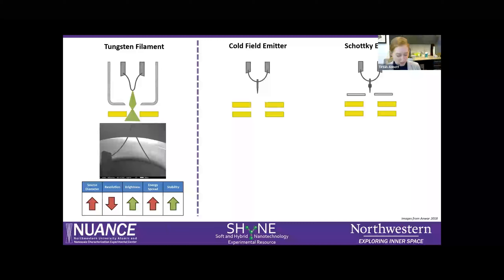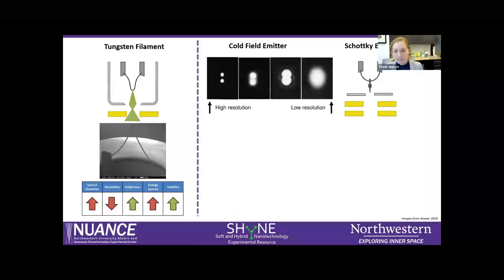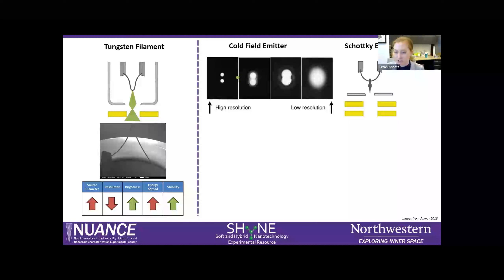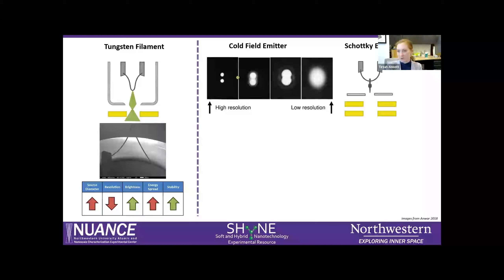In the SEM, resolution refers to the ability to resolve or differentiate two points. To achieve the highest resolution, you want your probe to be as small as or smaller than the smallest feature you want to analyze. Tungsten thermionic sources get changed about every 100 hours, so their lifetime is not very long compared to field emitters.